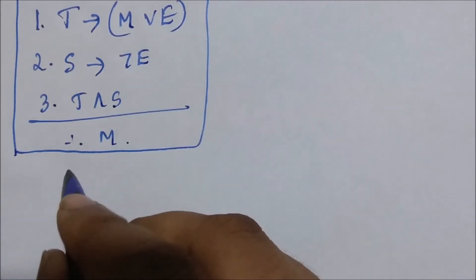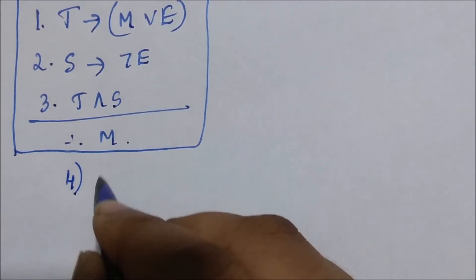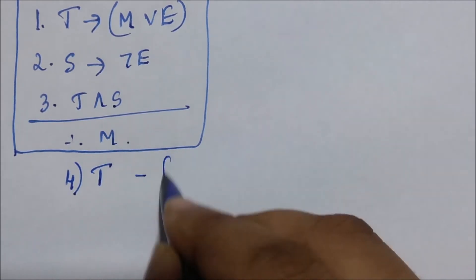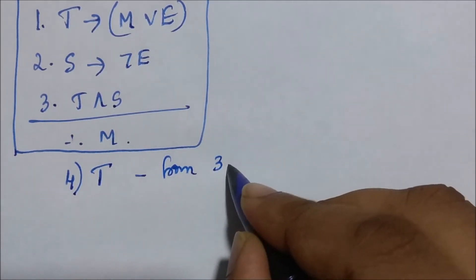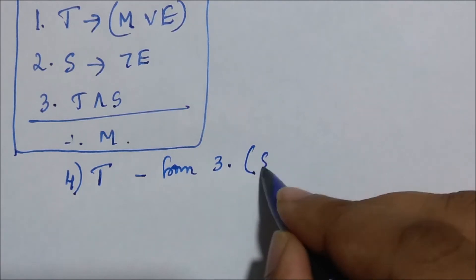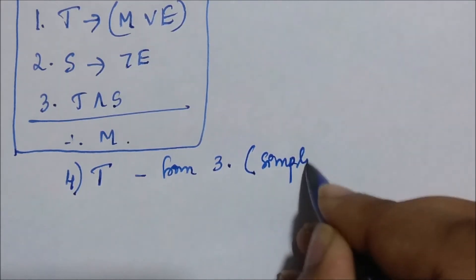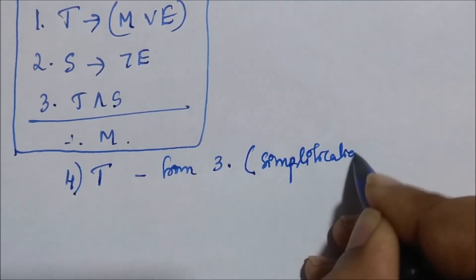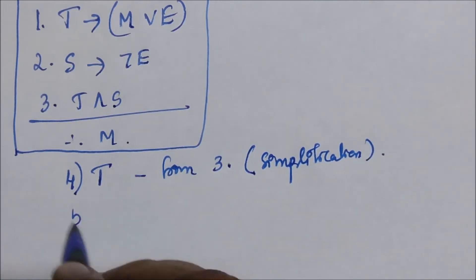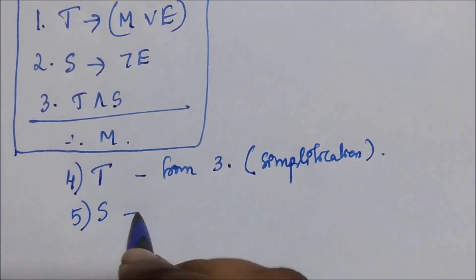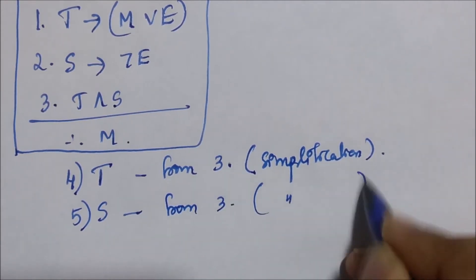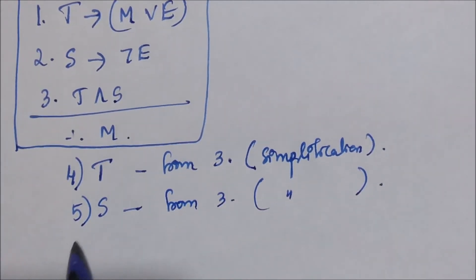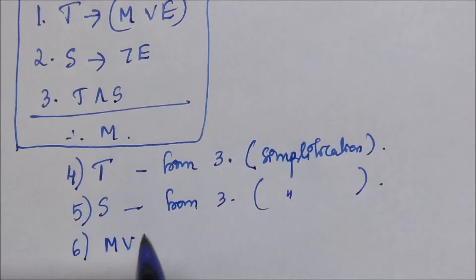We have T and S as a premise from the third statement. If T and S is true, then T has to be true and S has to be true. So T is true — that is the fourth statement, applying the rule of simplification. And the fifth statement is S is true, because we already know T and S are true, so S has to be true — again from three, using the rule of simplification.